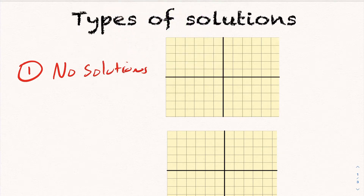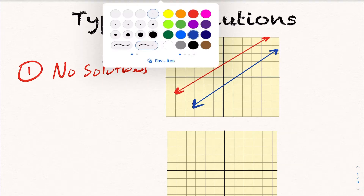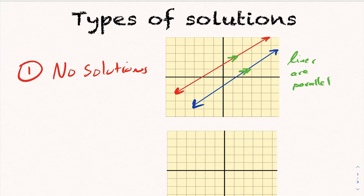Visually, the only way this can happen is if you have two lines that are parallel to one another. If you're in a situation where the two lines are parallel, you would have no point of intersection. No matter how long you extend either line, how far you go in the x-direction — both positive or negative — these lines will never cross, because they are parallel.